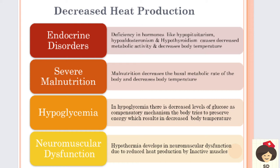When the body is exposed to cold temperatures, the nerves in the muscles get triggered and produce contraction of the voluntary muscles, causing shivering. When shivering occurs, heat is generated. On the other hand, when there is dysfunction in these muscles, the muscles become inactive and heat cannot be produced. These are the causes of decreased heat production which can result in hypothermia.